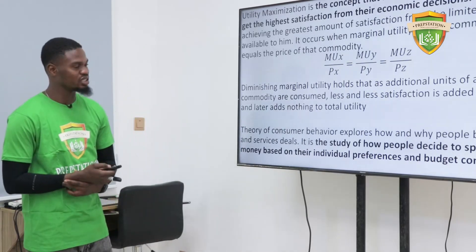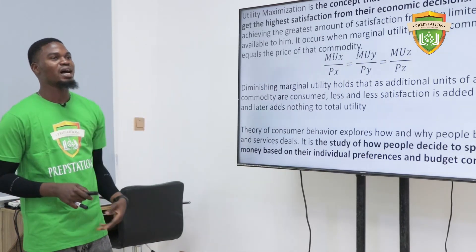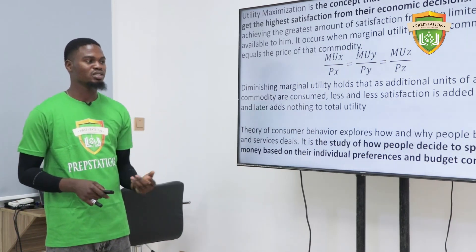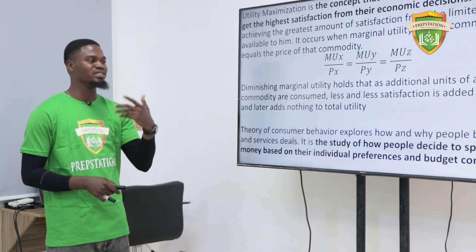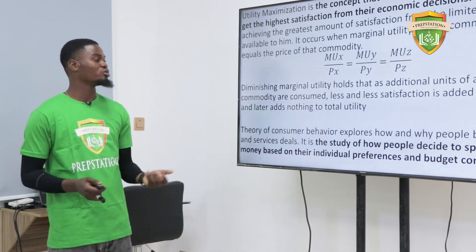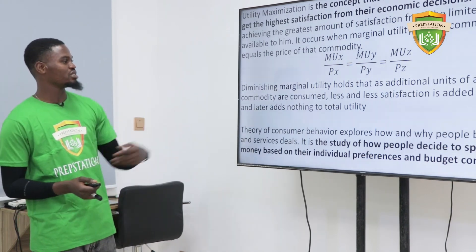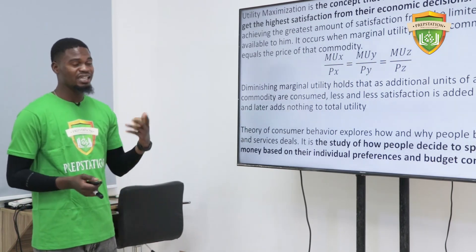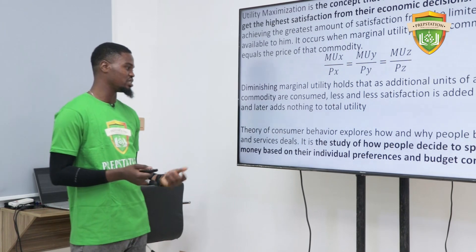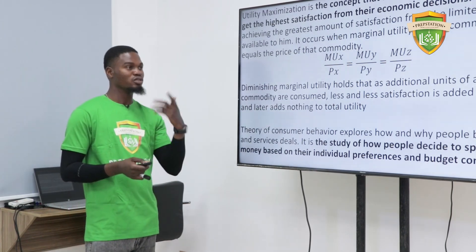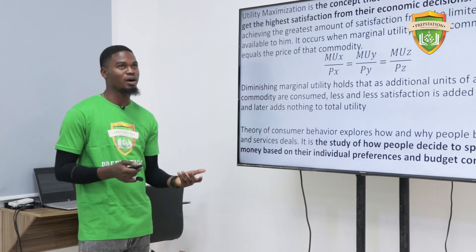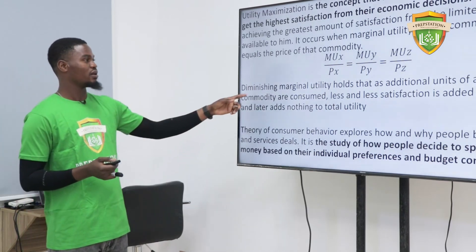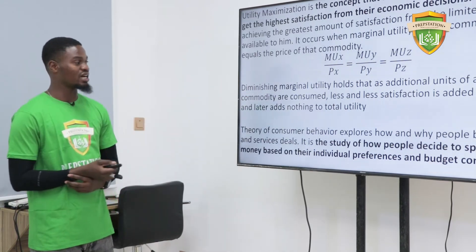The law of diminishing marginal utility states that as more of a particular commodity is consumed, it will get to a point where the satisfaction will begin to diminish until there is no more satisfaction. The marginal utility holds that as additional units of a commodity are consumed, less and less satisfaction is added to utility and later adds nothing. That is why you love a product, use it for a while, and get to a point where you are tired of it.